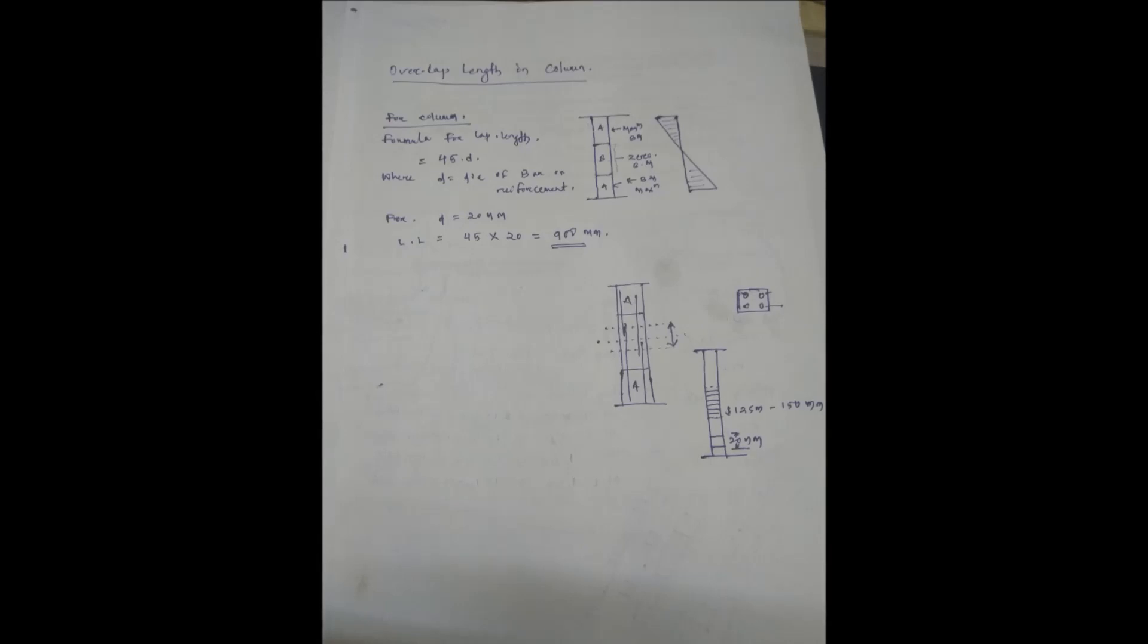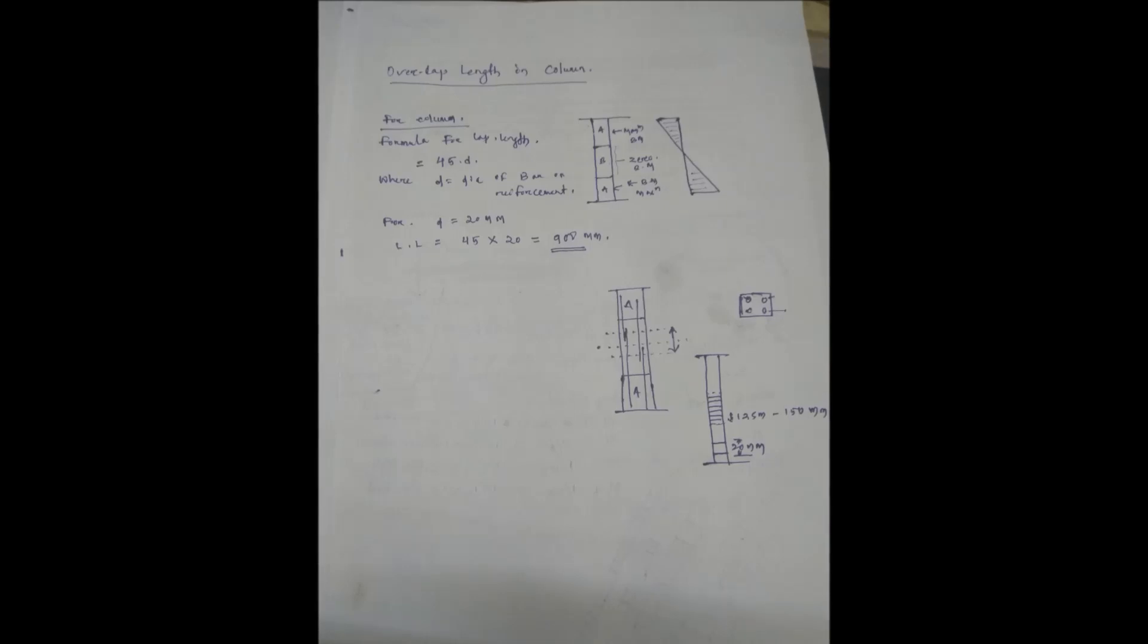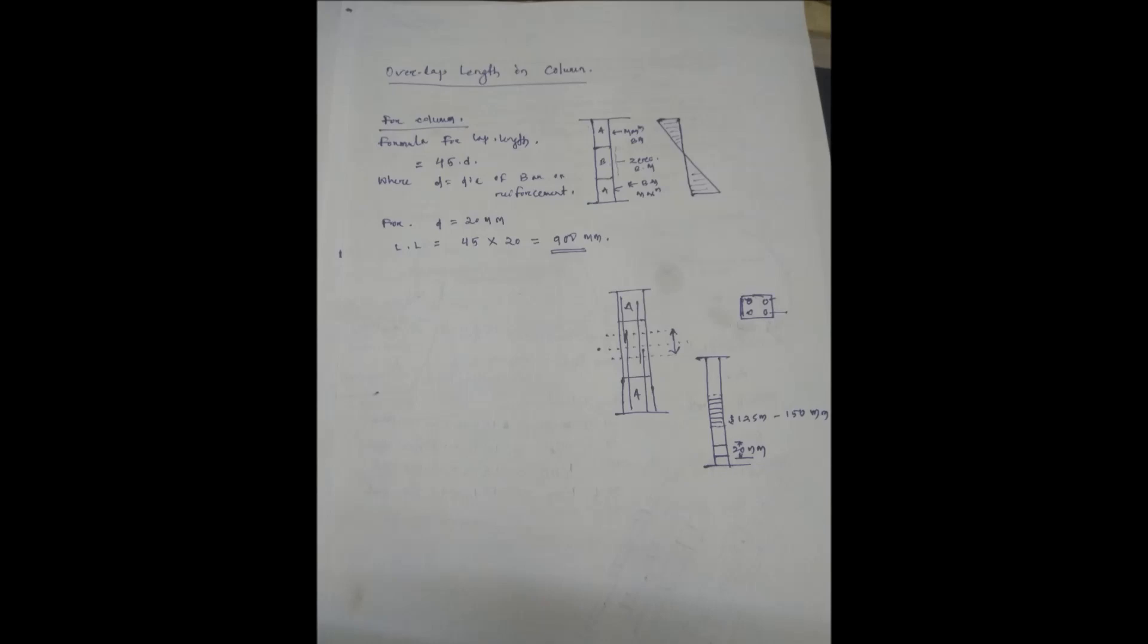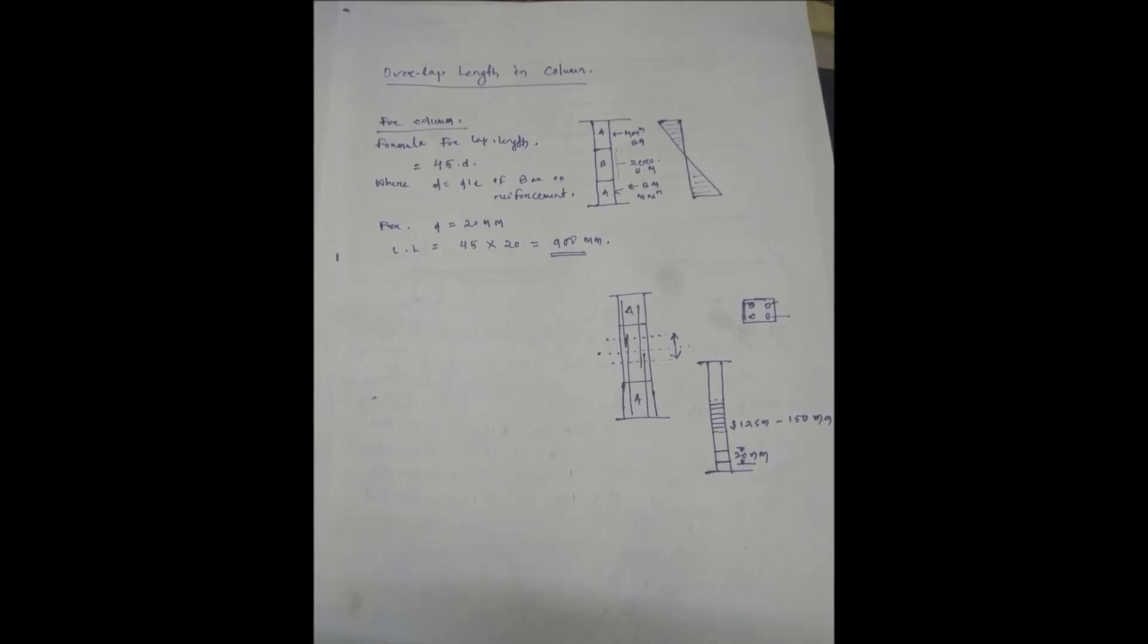As per IS code, we have to provide lapping where bending moment is zero or less for safe transfer of stresses without failure. So we can divide the column into three zones: zone A, zone B, and zone A. We have to provide lapping at zone B. Care should be taken during lapping so that lapping of